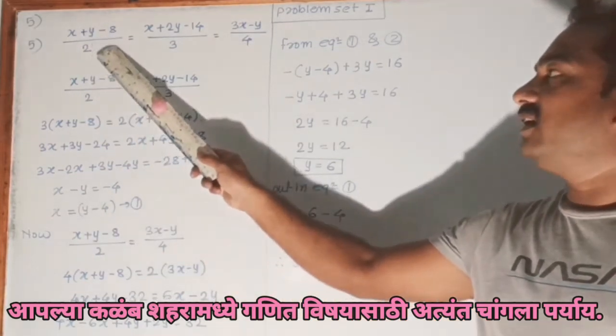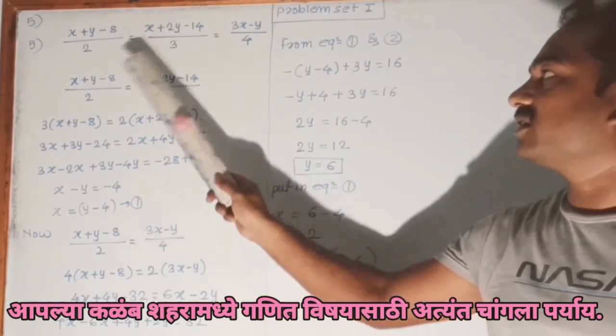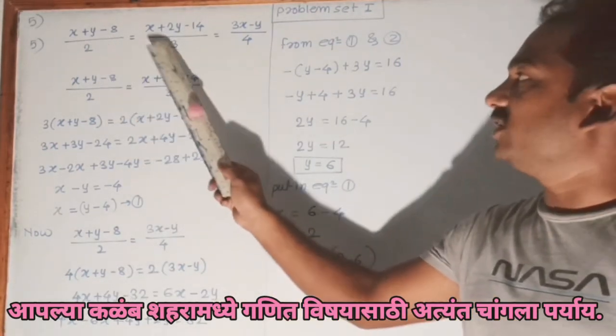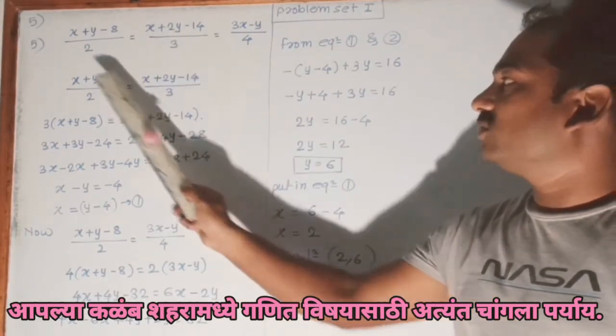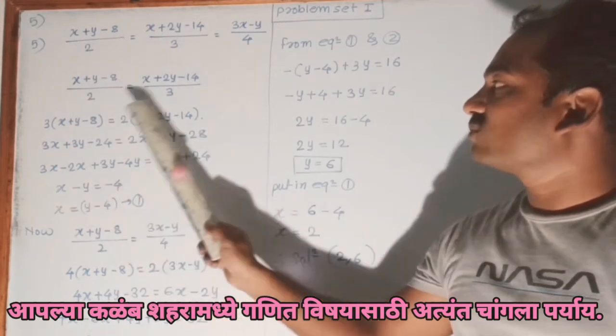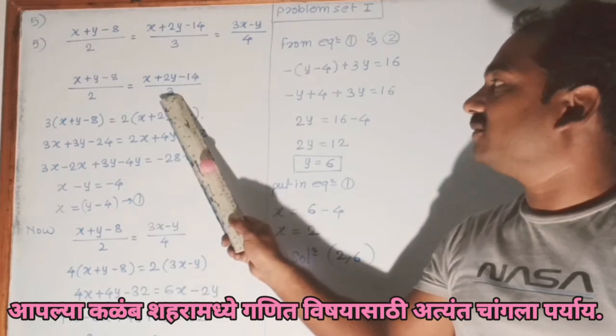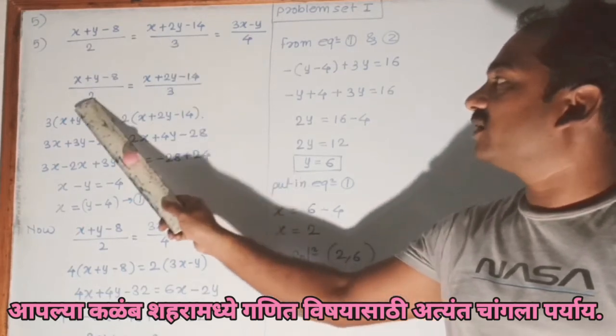First, we can write these two equal and do cross multiplication. We multiply this numerator by denominator 3 and this numerator by denominator 2.